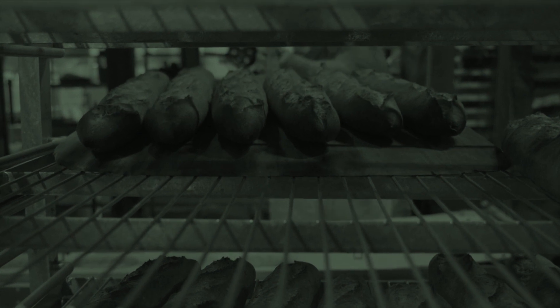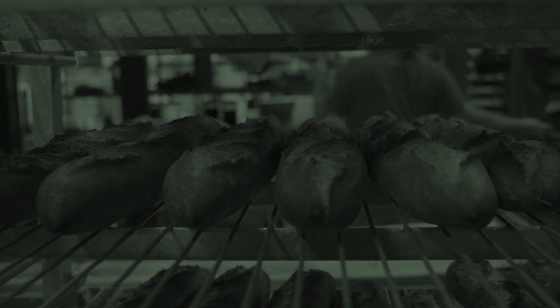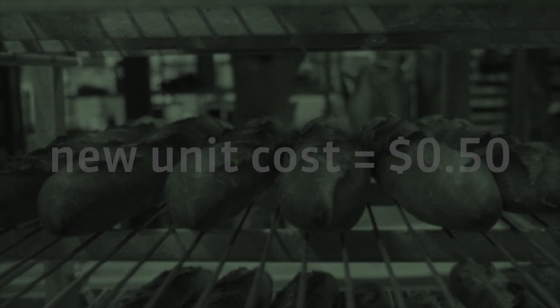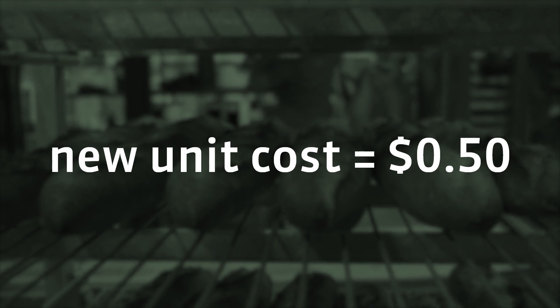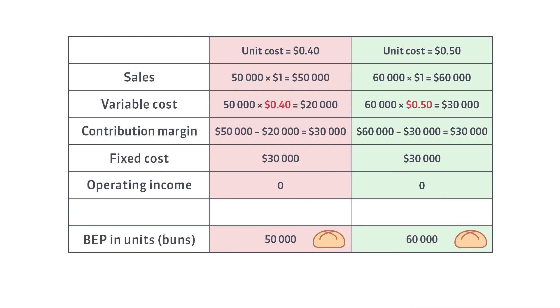And what will happen when the cost of energy increases? The cost of baking one bun will also increase — for example, to 50 cents. If the unit cost is greater, we will reach the breakeven point later, by selling more units. With a higher unit cost of 50 cents, the bakery has to sell 10,000 more buns to breakeven.